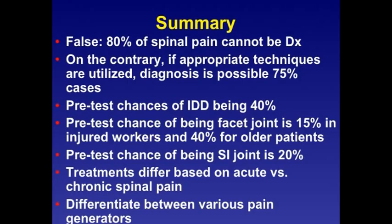For degenerative disc disease, would you rather use an interlaminar or a transforaminal approach? The transforaminal approach is used typically when there is single nerve root involvement, backed up by evidence of neuroforaminal narrowing, inclination of the discs, and stenosis of the neuroforamen. Otherwise, the answer would be to use the interlaminar approach. Intradiscal injections are typically done...